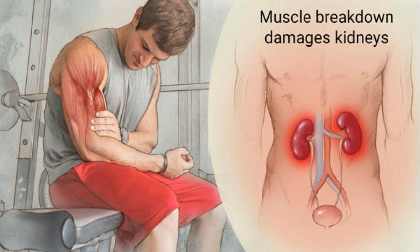The increase in the amount of fluids due to intravenous hydration helps the kidneys to get rid of myoglobin. Blood transfusion. In this procedure, the patient is given fresh blood via an intravenous line. Blood transfusion is done to replace the blood containing a high amount of myoglobin and other substances with healthy blood.